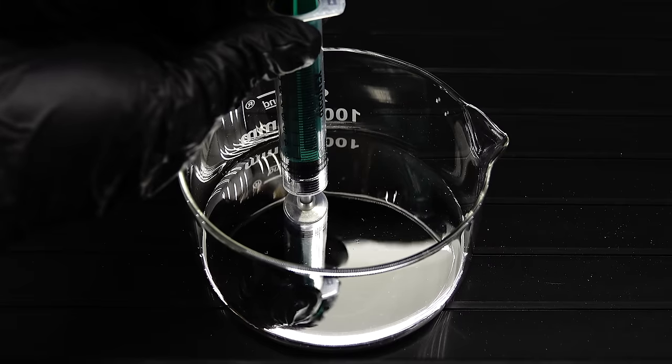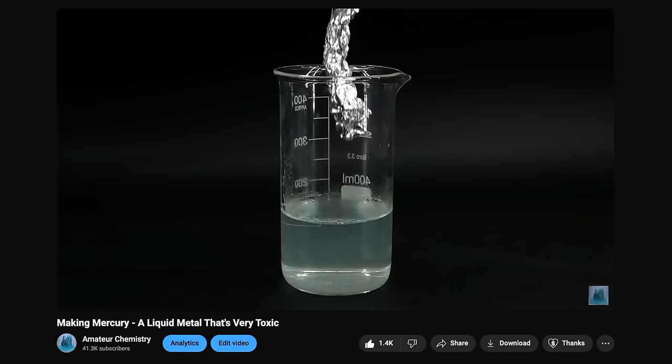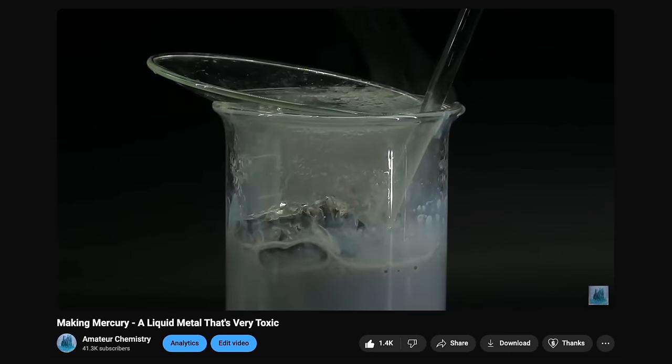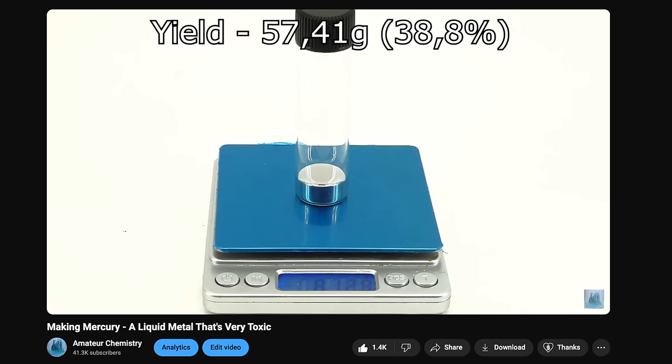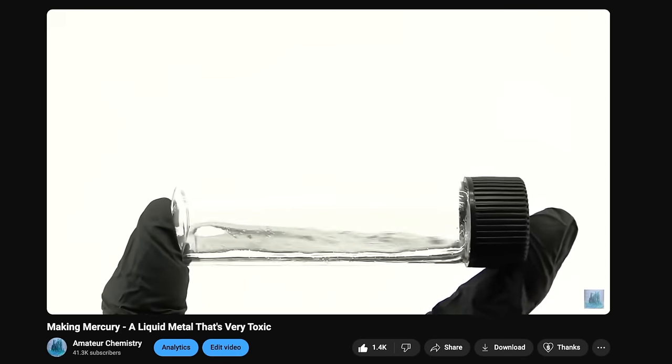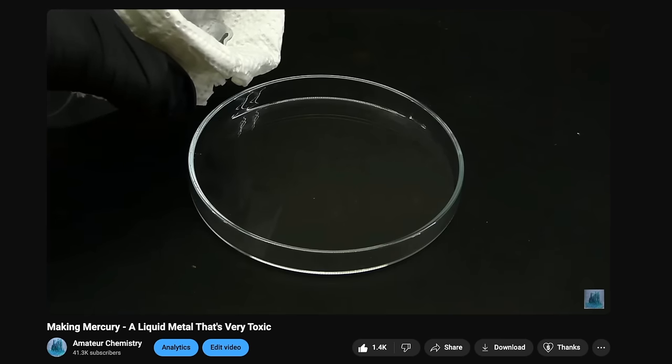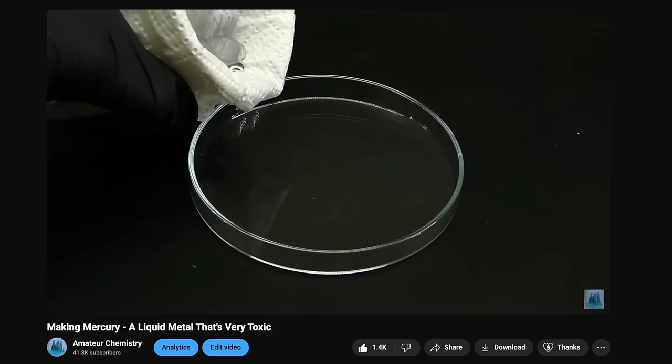I actually already made a video about it where I make it from a chemical called Mercury Chloride. In that video, I managed to produce about 60 grams of impure mercury, through some great struggle and potential exposure to Mercury Chloride's extreme toxicity, which put a stop to my mercury-related projects for a while. That's because, toxicity aside, 60 grams is really not much to work with, considering mercury's extreme density, and before using it for anything, I would have to purify it.